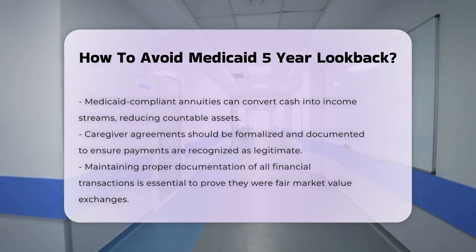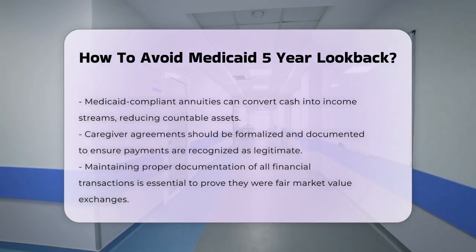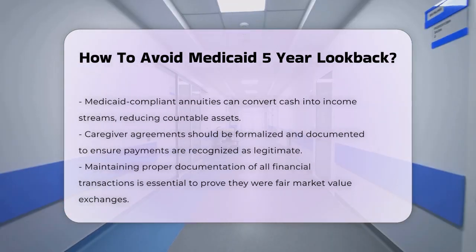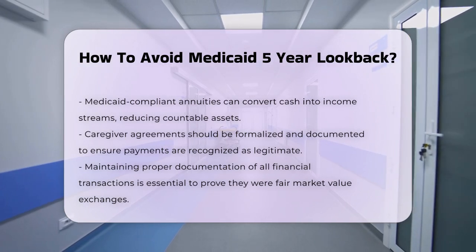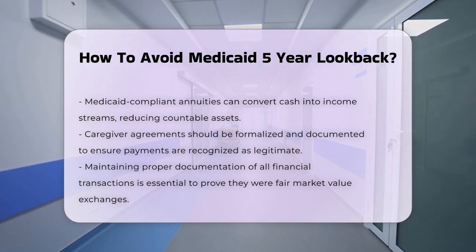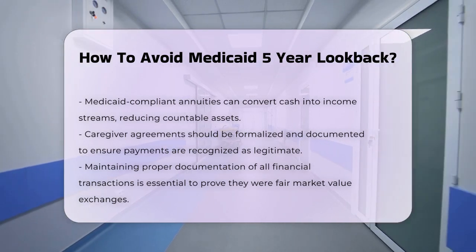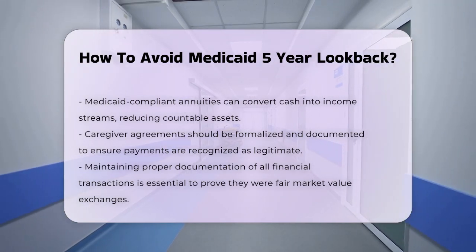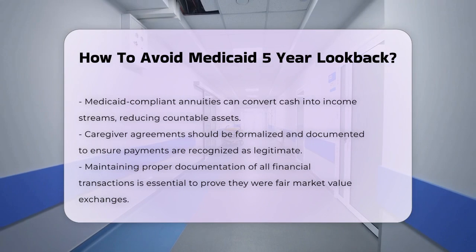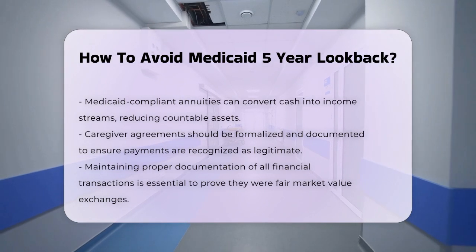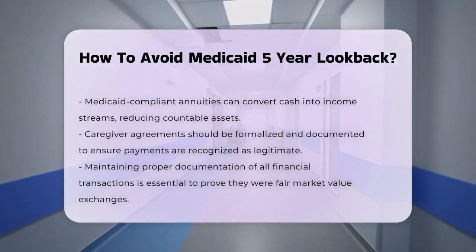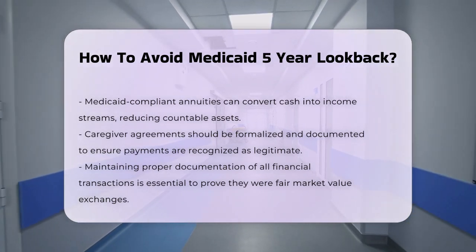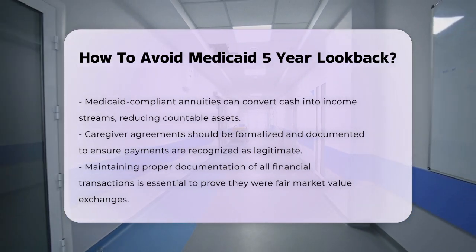Fourth, formalize caregiver agreements. You can pay a reasonable rate to a caregiver, such as a family member, for providing care. This must be documented in a formal agreement that includes the date of service, responsibilities, work hours, and compensation.